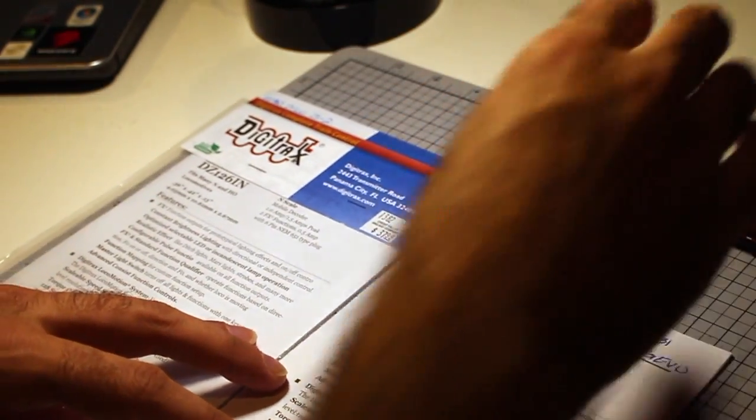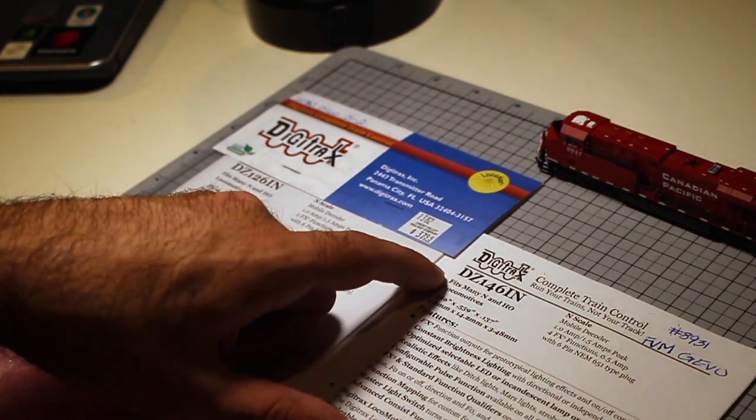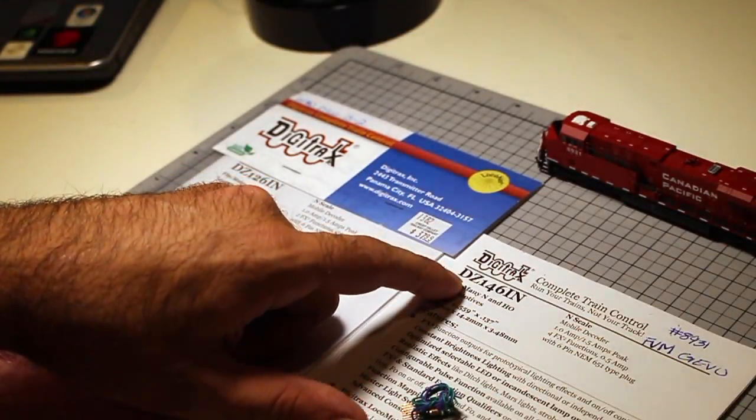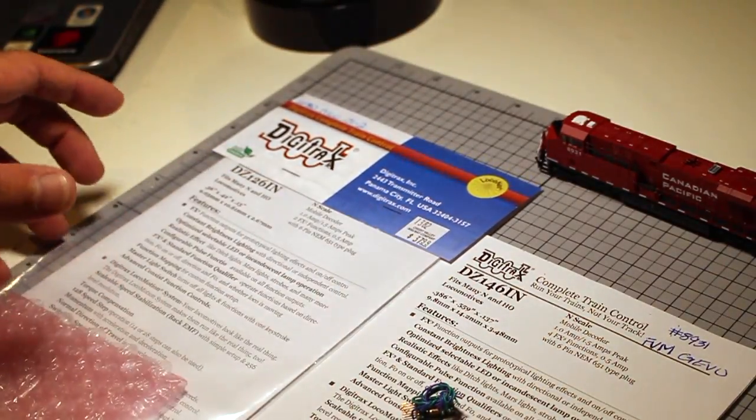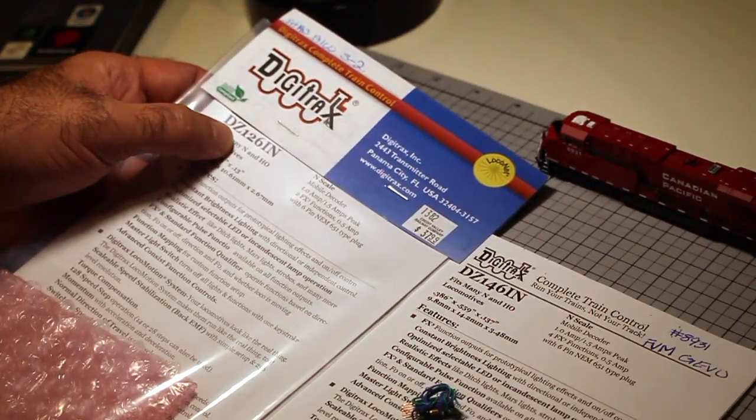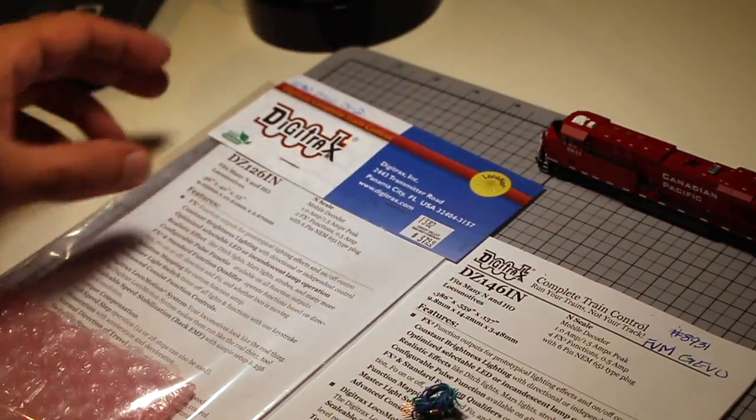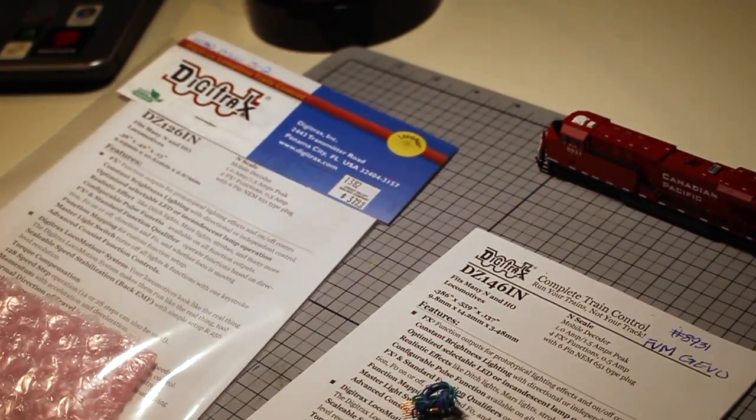With this one you can use one of two decoders. The one that I'm going to be using is the DZ146IN by Digitrax. The other one is the DZ126IN, both from Digitrax.